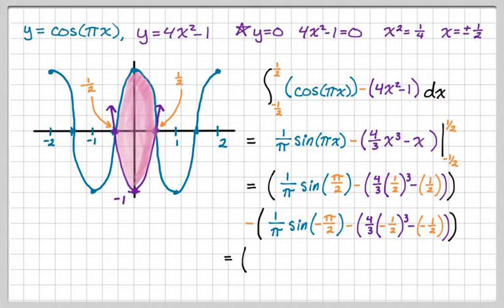So the first thing simplifies into 1 over pi. The sine of pi over 2 is 1. So that part's just 1 over pi. And then the second part, you get 4 thirds times 1 eighth. I'm not feeling all that great. So you get 1 third overall.